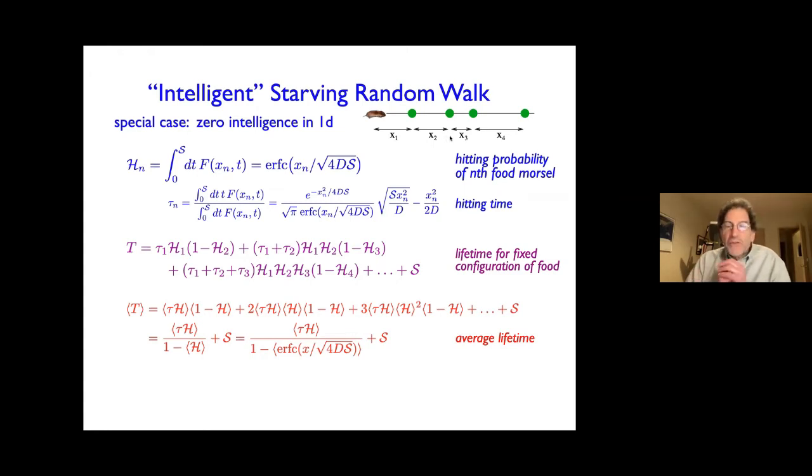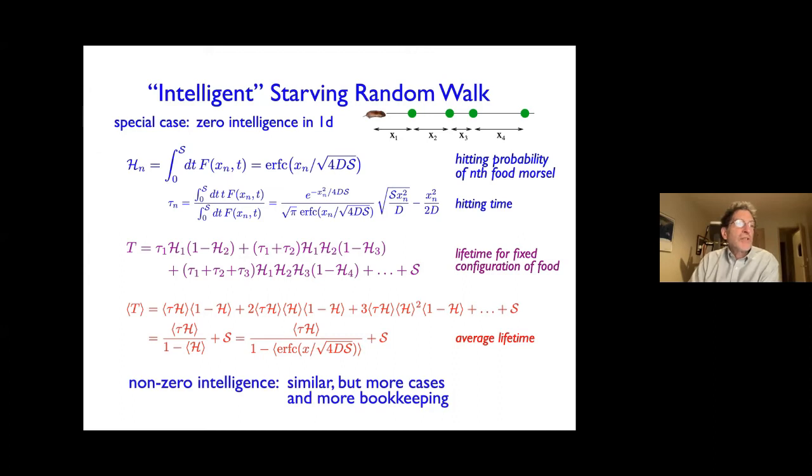Now, in the case of a smart forager, one has to work a little bit harder. There's a lot more bookkeeping, because sometimes you're going ballistically, sometimes you're going diffusively. But the idea behind the calculation is exactly the same, and so I'm not going to show any details. This is the only technical slide of the talk. And so let me just say that in the case of non-zero intelligence, it's the same philosophy of the calculation. It's just much more involved with more cases, more bookkeeping. That's probably not of interest to us at the moment.